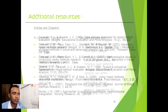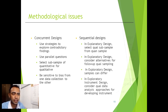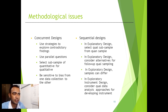Methodological issues for both designs in mixed method research: for the concurrent design, use strategies to explore contradictory findings and use parallel questions since we are using both at the same time. Select a subsample of quantitative or qualitative, and be sensitive to bias from one data collection to the other. For the sequential explanatory design, select a qualitative subsample from the quantitative subsample and consider alternatives for follow-up qualitative samples. For the exploratory design, consider qualitative data analysis approaches for developing instruments.